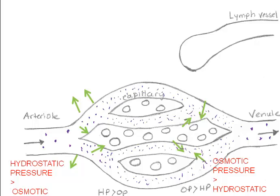The other 10% enters the lymphatic vessels, which eventually merge with the circulatory system so that the fluid is returned to general circulation. Midway along the capillary, where blood pressure is lower, the two forces — hydrostatic pressure and osmotic pressure — essentially cancel each other out, and there is no net movement of water.